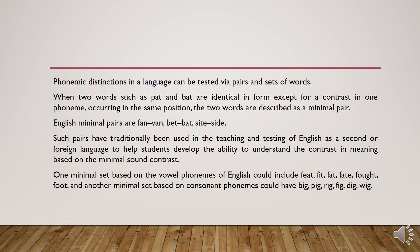In a language, phonemes can be tested via pairs and sets of words. When two words such as 'pat' and 'bat' are identical in form except for a contrast in one phoneme occurring in the same position, the two words are described as a minimal pair. More accurately, they would be classified as a minimal pair in the phonology of English.